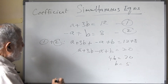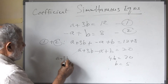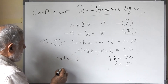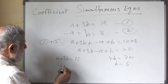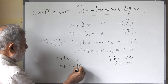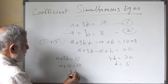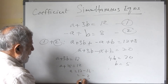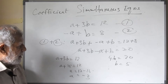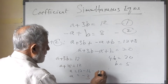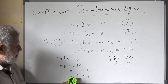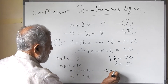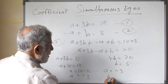Now we will take the first equation: a plus 3b equals 12. Since b equals 5, we substitute: a plus 15 equals 12. So a equals 12 minus 15, that is minus 3. So a equals minus 3 and b equals 5. We will box the answers: a equals minus 3 and b equals 5.